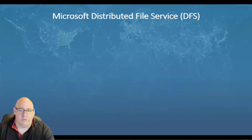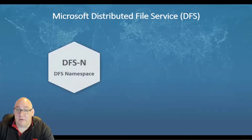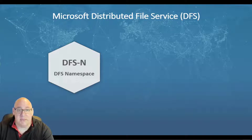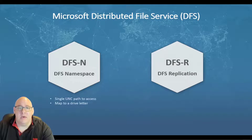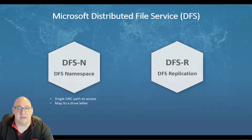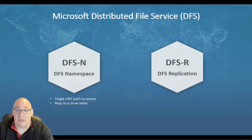There are two components to Microsoft DFS: DFSN, also known as DFS Namespace, and DFSR, or DFS Replication. The DFS Namespace allows users to use a single address to access many disparate shares, and the namespace's UNC path can also be mapped to a drive letter to make it even easier.